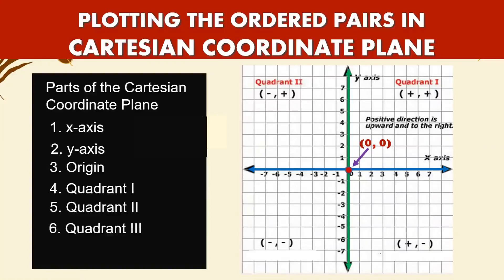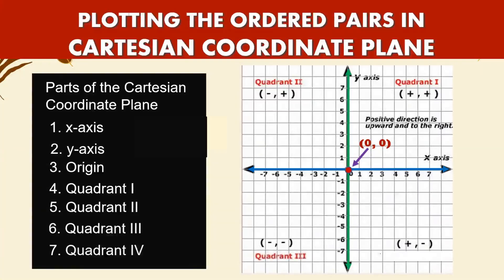Quadrant three: x is negative and y is negative. Quadrant four: x is positive and y is negative.